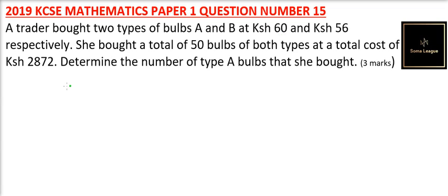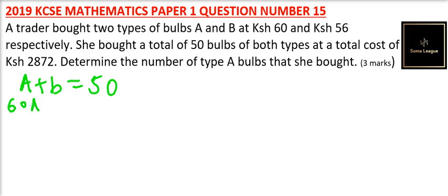The total number of barbs was 50, so we can say A plus B equals 50. Then when you multiply 60 by A and add 56 — that is the cost of B — that gives us the total cost of 2,872.